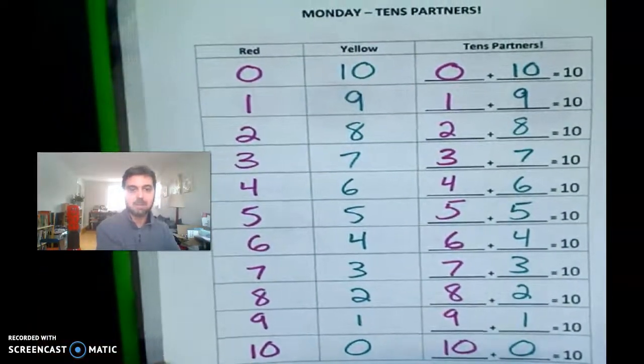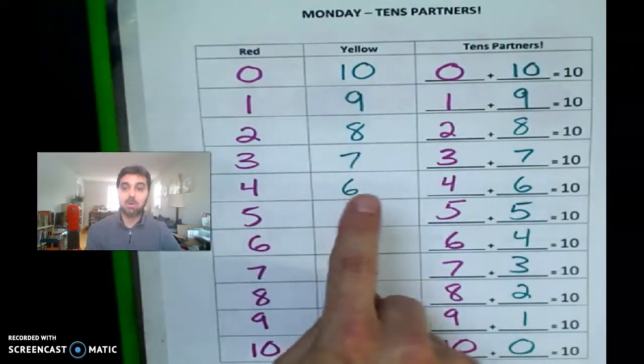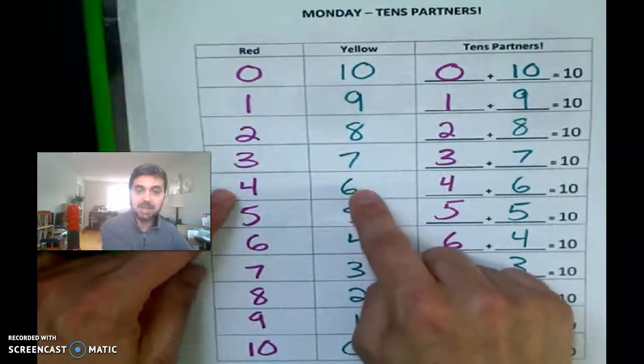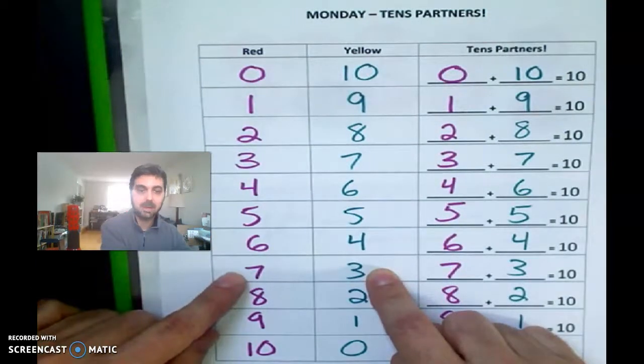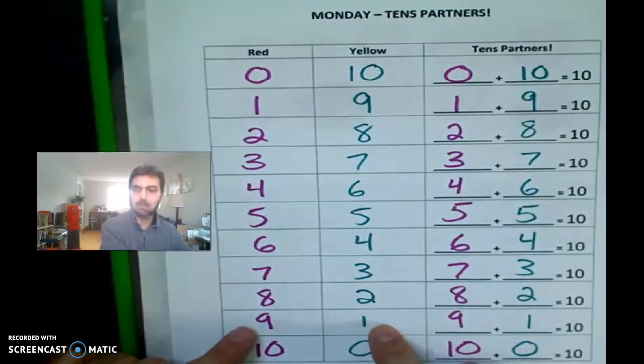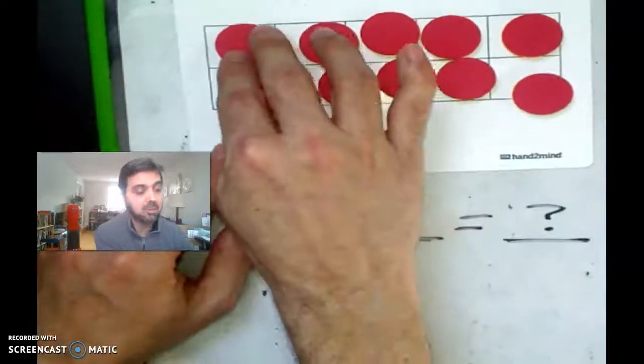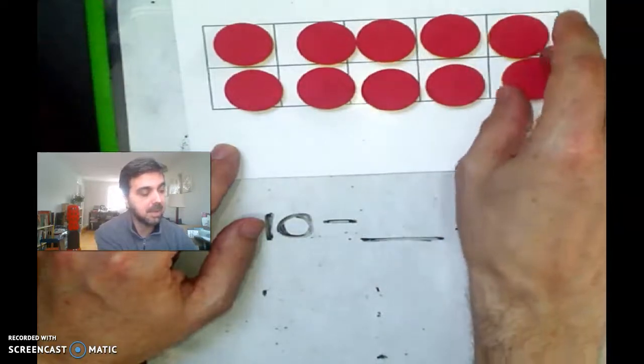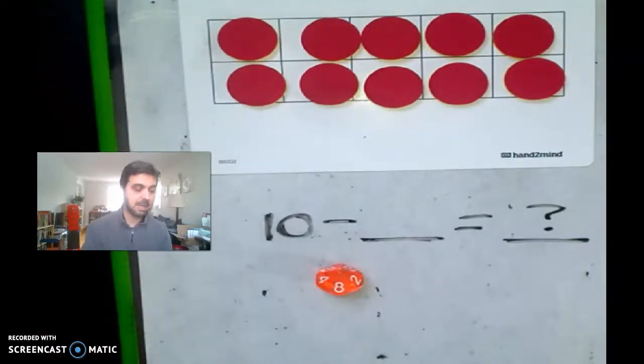All of these are tens partners, right? 0 and 10, 1 and 9, 2 and 8, 3 and 7, 4 and 6, 5 and 5, and then if you turn them around, if 4 and 6 makes 10, so does 6 and 4. If 3 and 7 makes 10, so does 7 and 3, okay? If 2 and 8 makes 10, so does 8 and 2. And if 1 and 9 makes 10, so does 9 and 1, okay? So let's keep that in mind as we move forward because we know that subtraction is very much connected to addition. So let's take a look at what we're talking about here.